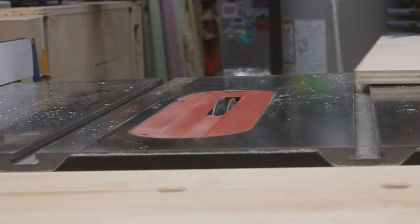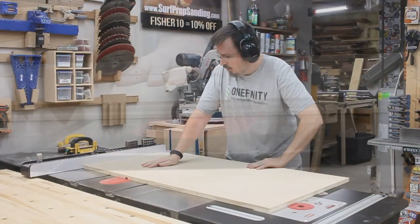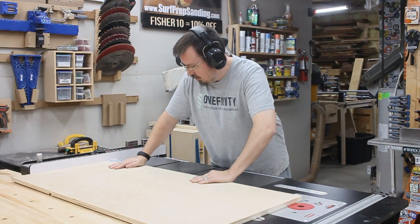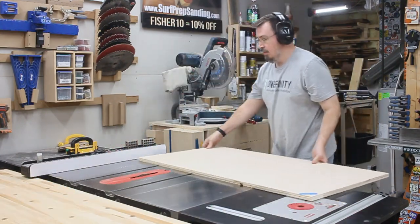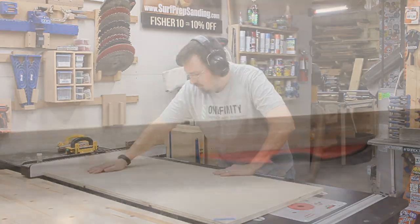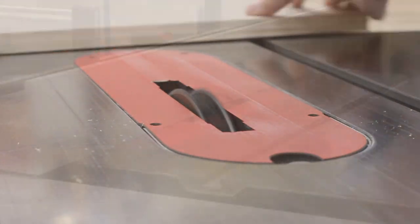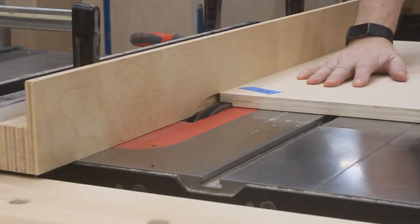Now there's plenty of ways to build a cabinet, but I like to use dados and rabbits because the pieces just sort of snap together and they hold themselves square during assembly. So I cut a couple dados for the inner dividers to fit into, and then some rabbits along the edges.